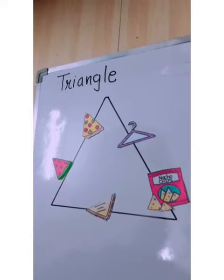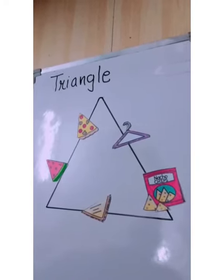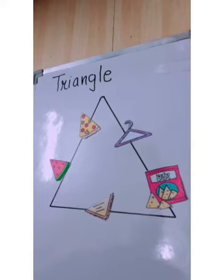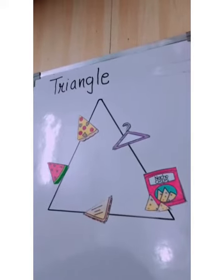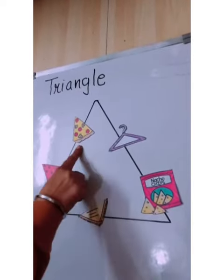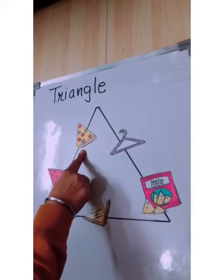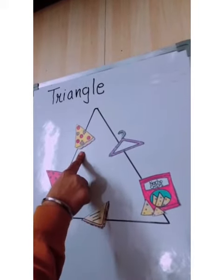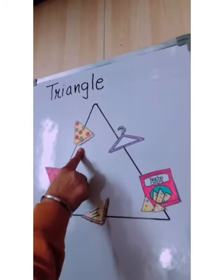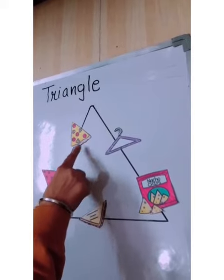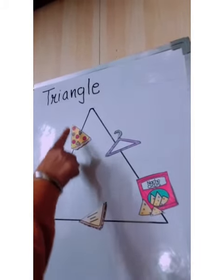There are so many pictures related with the triangle shape objects. Let's see one by one. Which picture is this? This is a pizza. I am sure you must all like to eat pizza. The shape of pizza is triangle shape — see, it is so colorful.